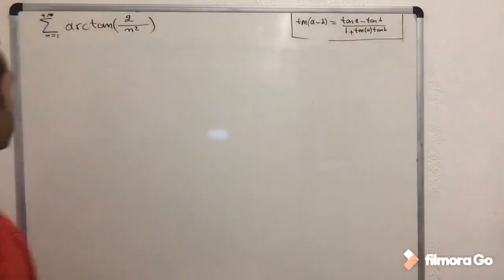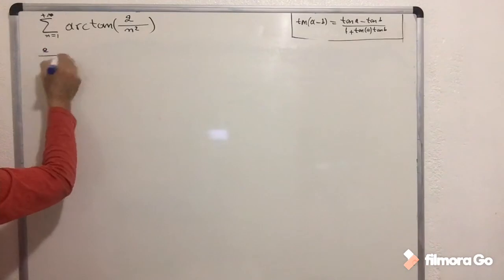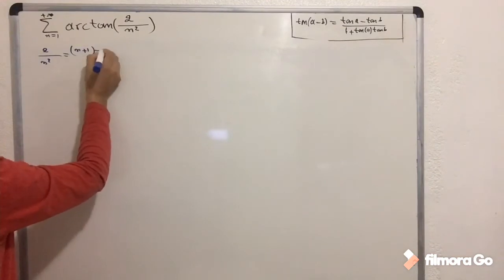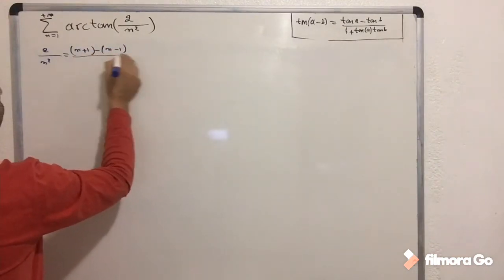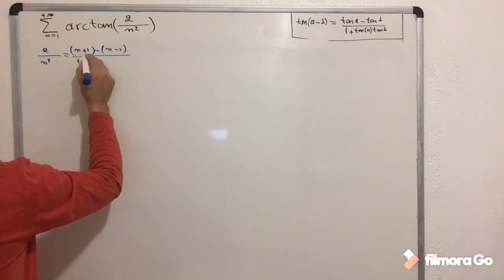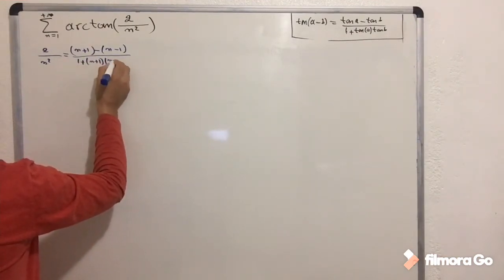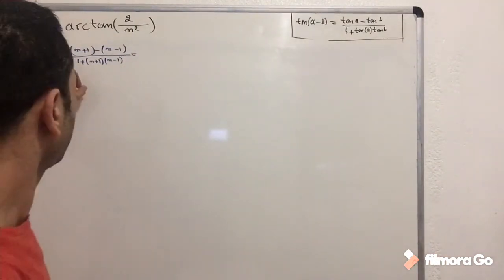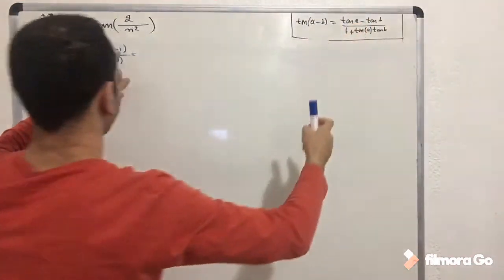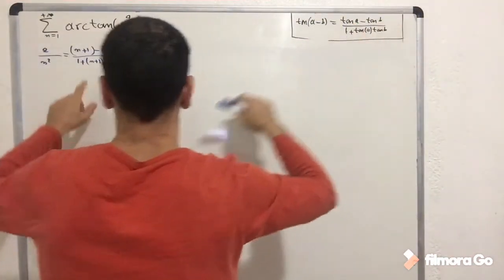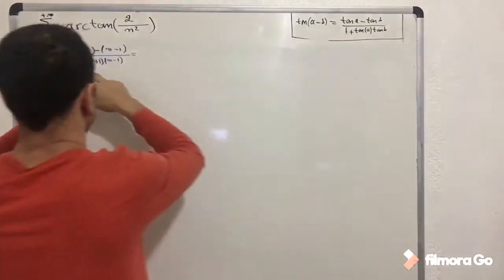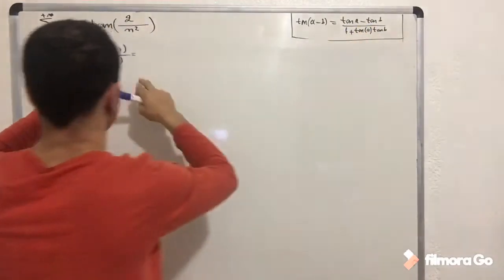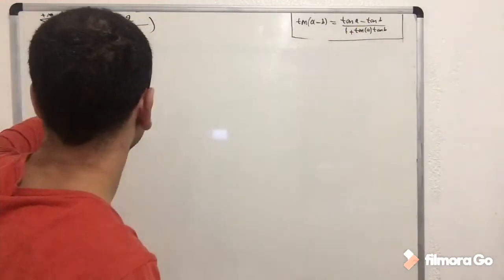Let's begin. We write 2/n² as (n+1 − (n−1)) / (1 + (n+1)(n−1)). If you look at this again, n+1 represents tan a, and n−1 represents tan b. We have a positive sign between 1 and tan a · tan b — so it matches the tangent subtraction formula exactly.